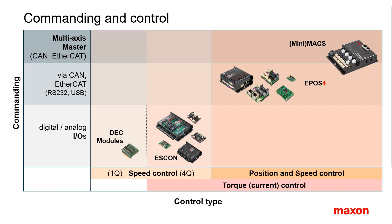In summary, the pure speed controllers DEC and ESCON are commanded by simple digital and analog IOs only. The position controllers EPOS need a master system with more sophisticated bus communication, such as the MAX products can provide. Simple IOs will not do the job.